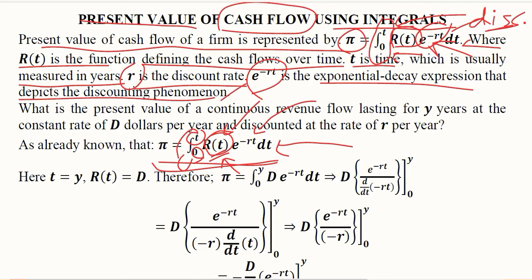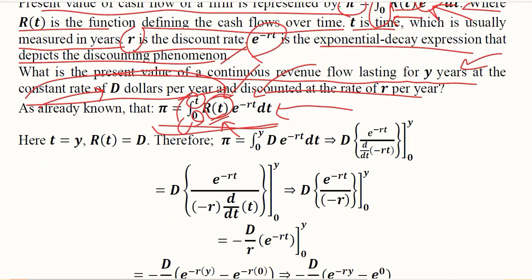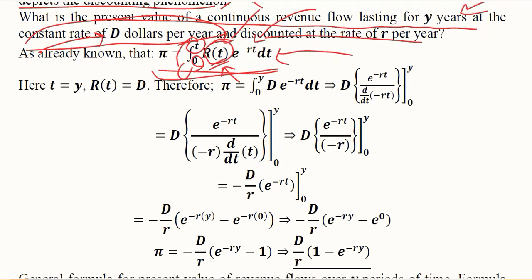Now we are to find out what will be the present value of the continuous revenue which is lasting for y years and is happening at D dollars per year at a constant rate. D is a constant value every year, we are getting D dollars, and it is discounted at r percent discount rate. This is the formula that we just saw, and now we will try to simplify it.